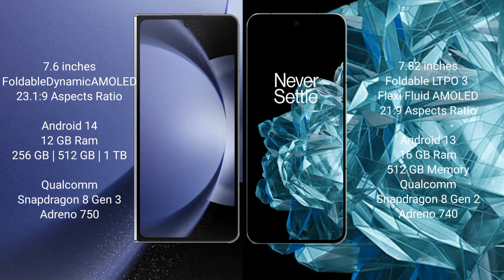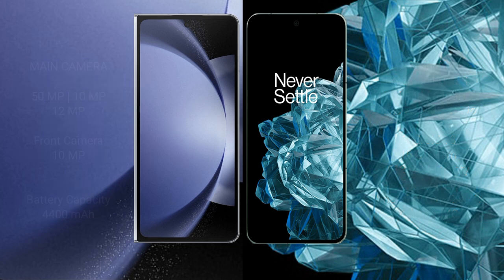Samsung Galaxy Z Fold 6 comes with 12GB RAM and 256GB internal storage, powered by the Qualcomm Snapdragon 8 Gen 3 processor. OnePlus Open comes with 16GB RAM and 512GB internal storage, powered by the Qualcomm Snapdragon 8 Gen 2 processor.